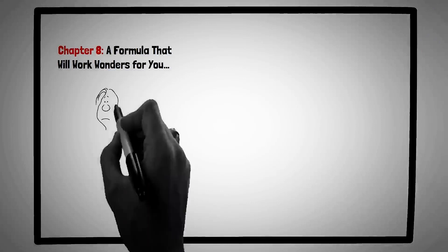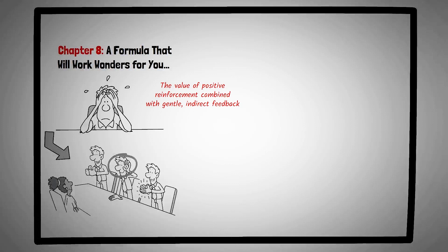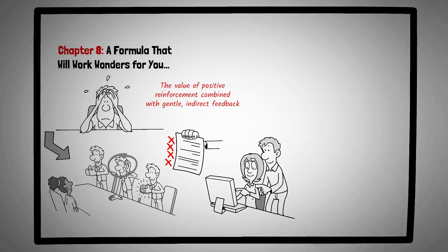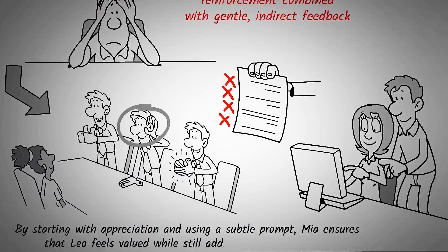Chapter eight, a formula that will work wonders for you. Navigating the delicate balance between expressing appreciation and addressing mistakes is a challenge many face. This chapter offers insights into this art, emphasizing the value of positive reinforcement combined with gentle, indirect feedback. Consider the story of Mia, a team leader at a design firm. One of her team members, Leo, submits a project that, while creative, misses some of the client's specifications. Instead of directly pointing out the errors, Mia starts by praising Leo's innovative approach and the unique elements he introduced. She then poses a question: How do you think the design would look if we incorporated some of the client's original color preferences? This indirect feedback prompts Leo to review the specifications and make the necessary adjustments. By starting with appreciation and using a subtle prompt, Mia ensures that Leo feels valued while still addressing the oversight.